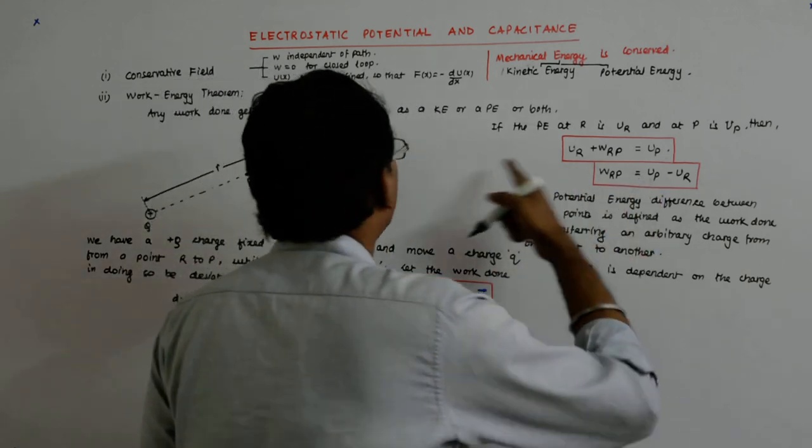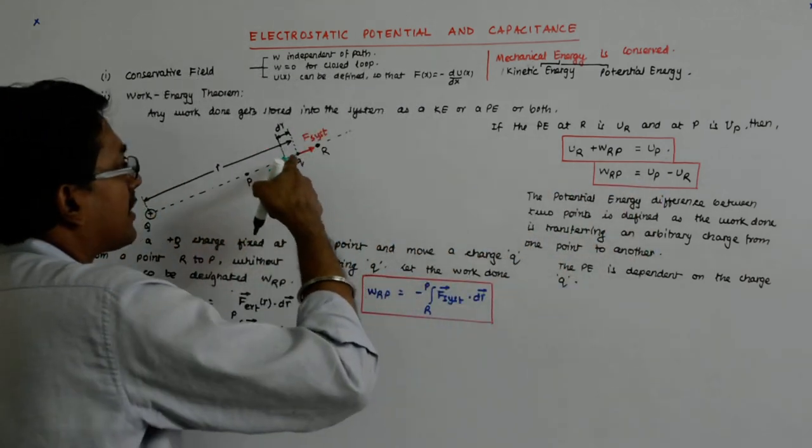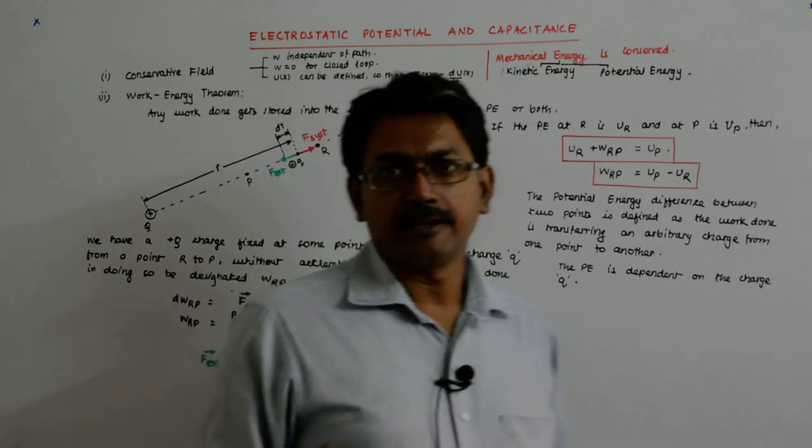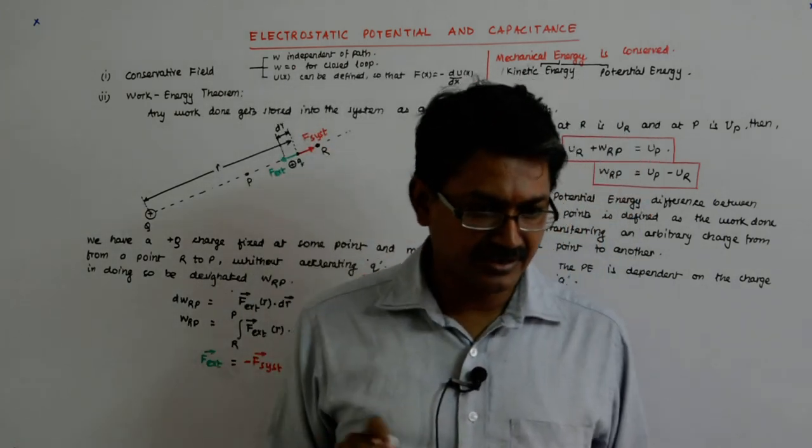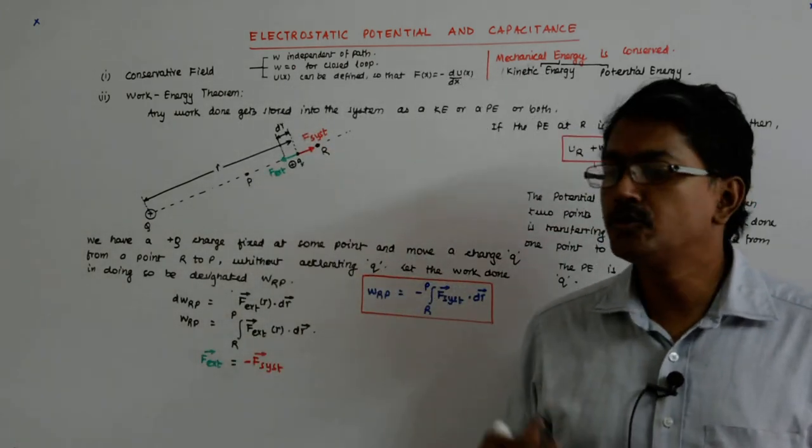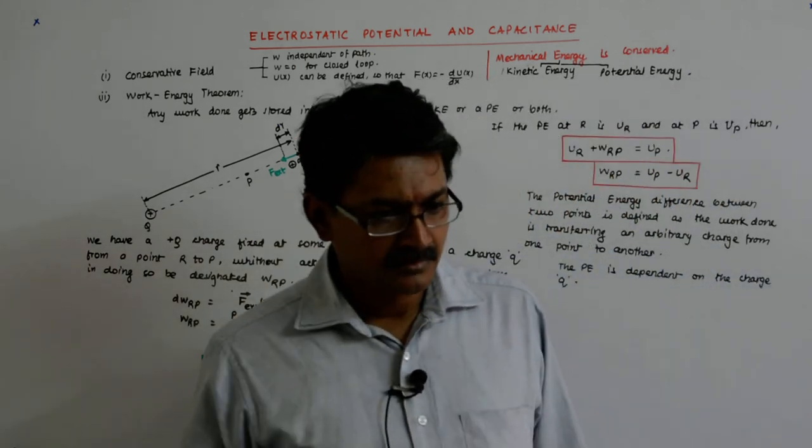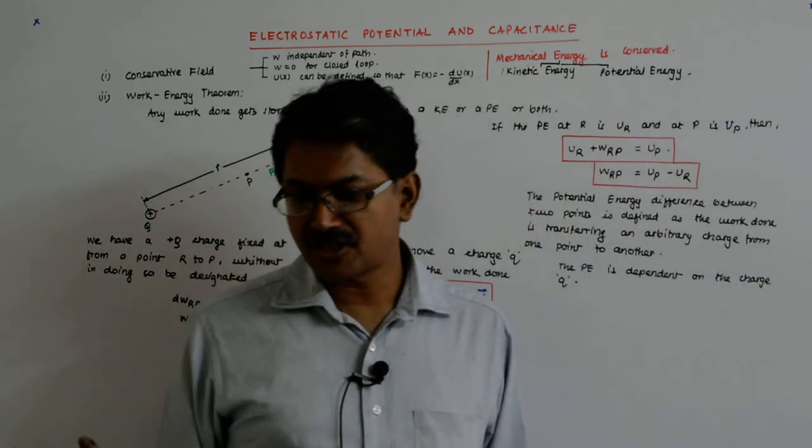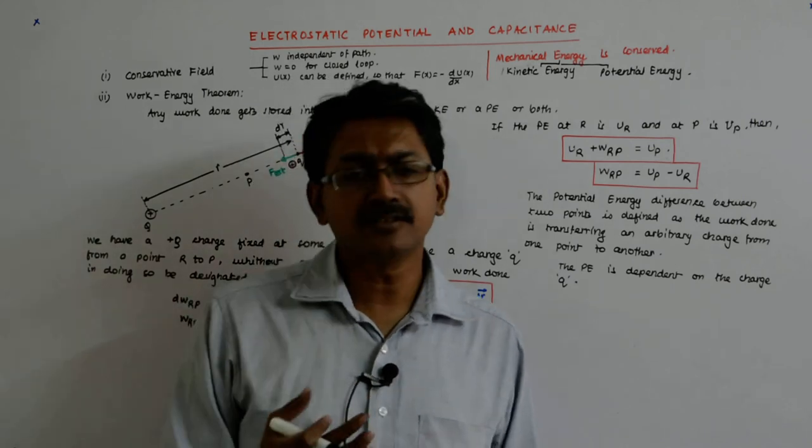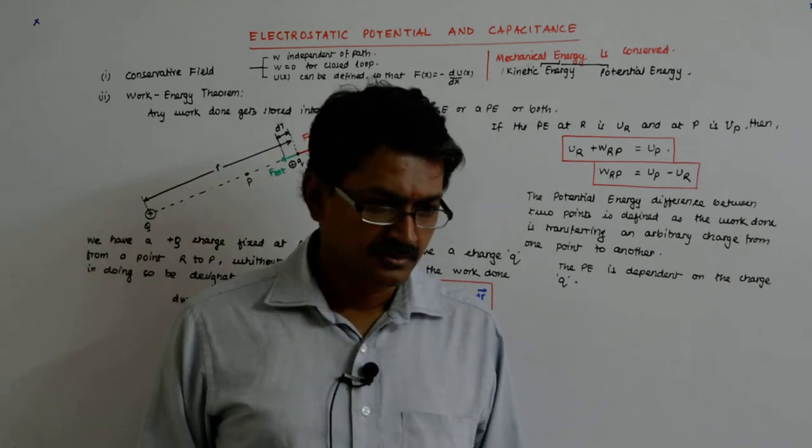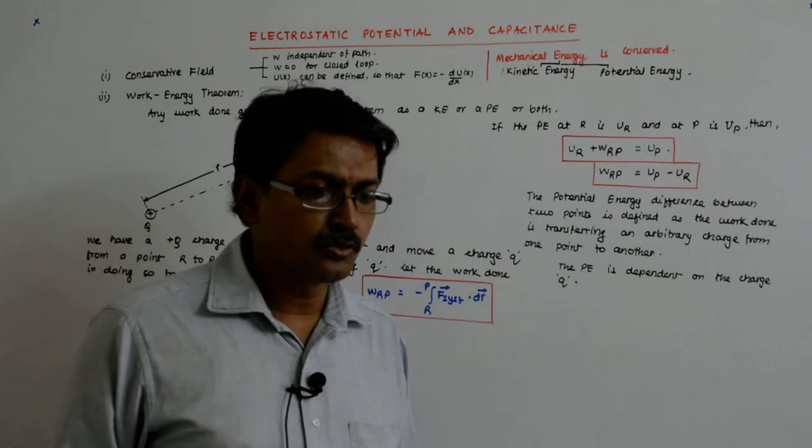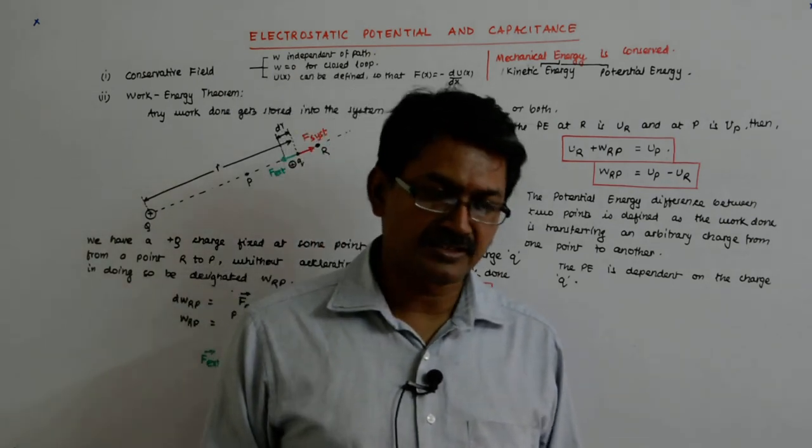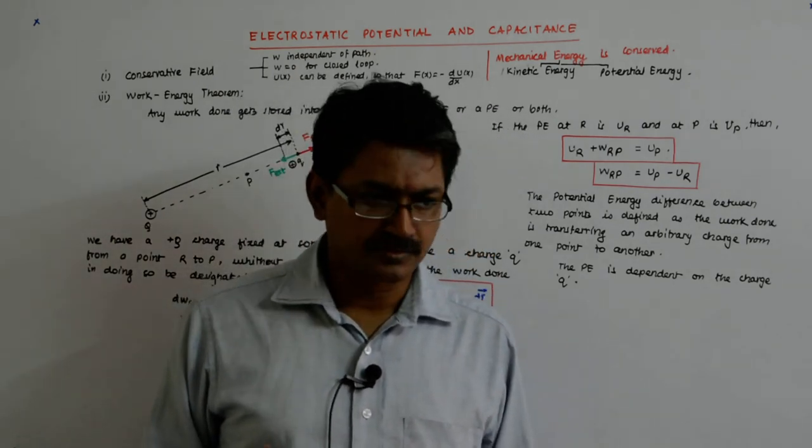So someone who brings in a Q amount of charge, if he sees that the potential difference is say 2 joules, then someone getting in 2Q amount of charge will see that the potential difference is 4 joules. Someone with 3Q will see the potential difference as 6 joules, triple of that.